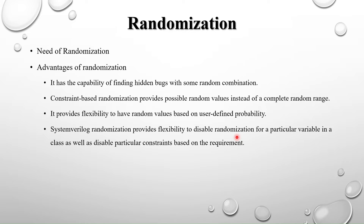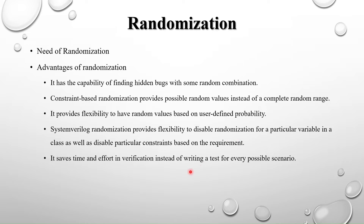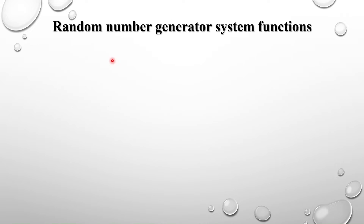Finally, randomization saves time and effort in verification. Instead of writing a test for every possible scenario, constraint-based randomization provides possible random values — giving specific values using constraints — which saves significant time and effort.